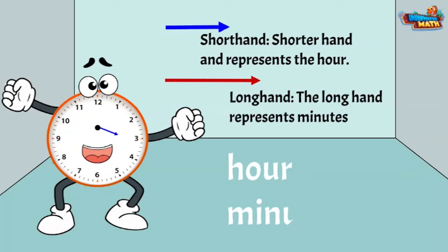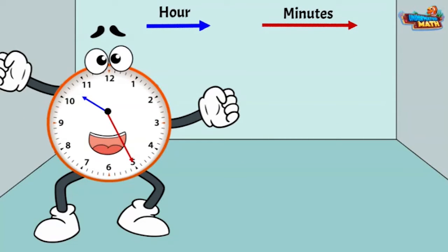Another cool way to remember the difference in the hands is that the word 'hour' is shorter than the word 'minute.' The shorter hand represents the shorter word. Time is written by writing the hour first and the minute second.